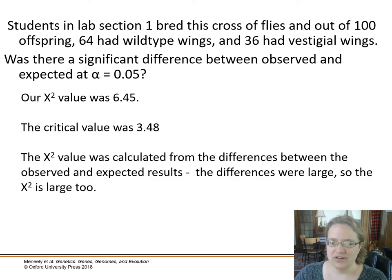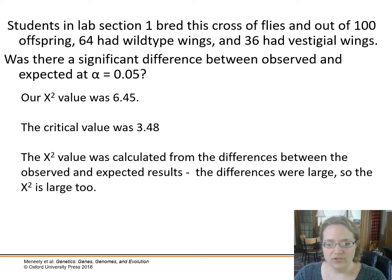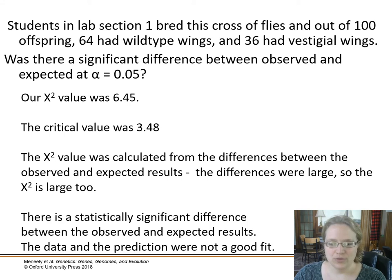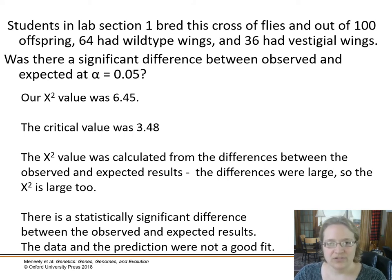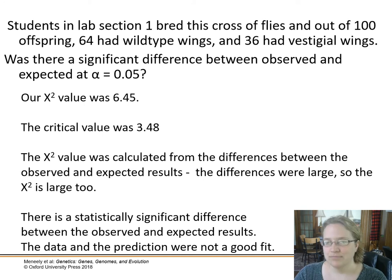Since our chi-square value was calculated from large differences between observed and expected values, the chi-square is large too. This means there is a statistically significant difference between the observed and expected results — the data and the prediction were not a good fit. Something happened: either we made the wrong prediction or the students did the cross incorrectly. This almost looks like a two-to-one ratio instead of a three-to-one.